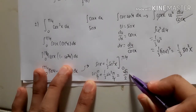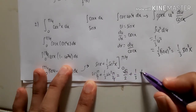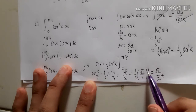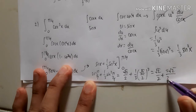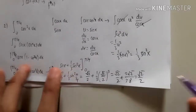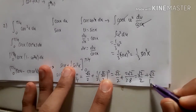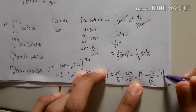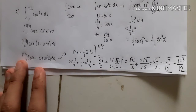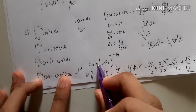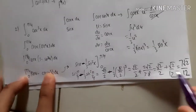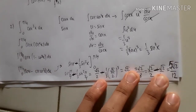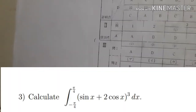With sin(π/4) = √2/2, we get √2/2 minus (1/3)(√2/2)³. Now (√2/2)³ = 2√2/8 = √2/4, so the second term is (1/3)(√2/4) = √2/12. Thus the answer is √2/2 − √2/12 = 6√2/12 − √2/12 = 5√2/12. That's the answer for number two.